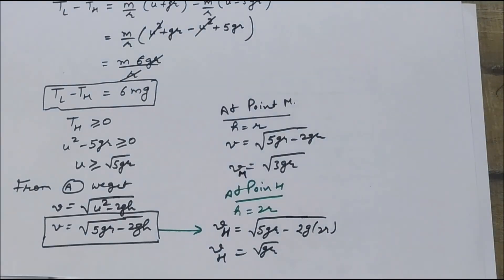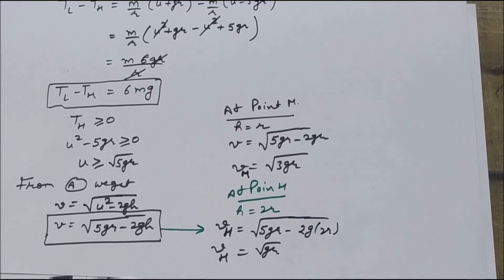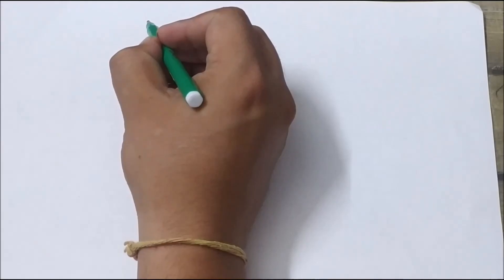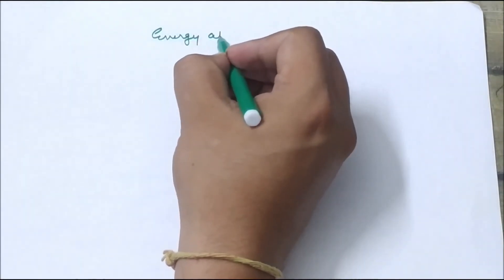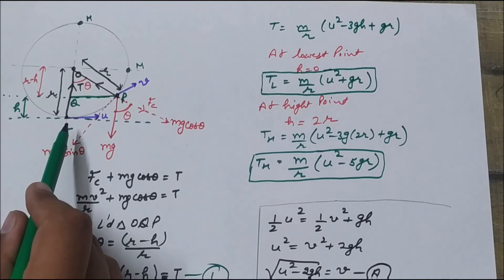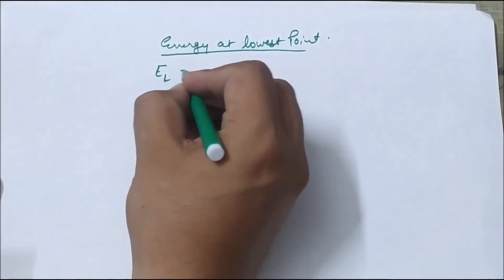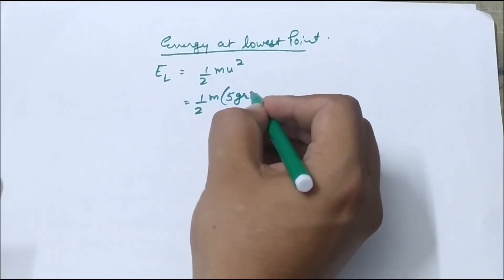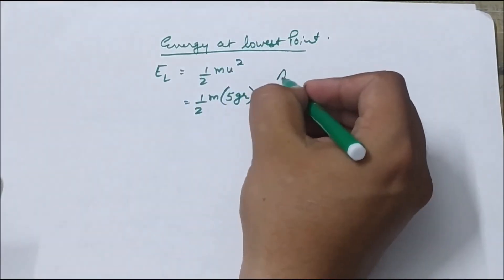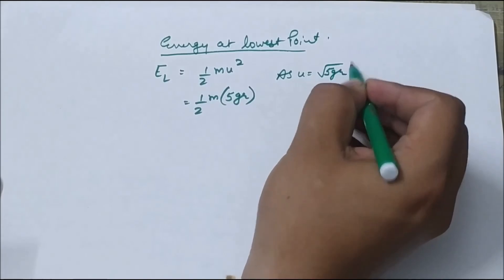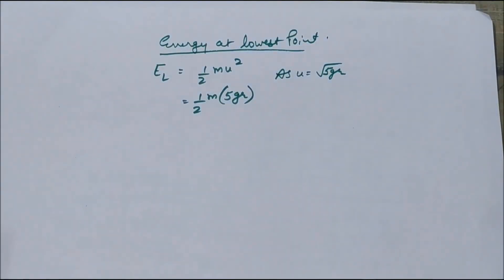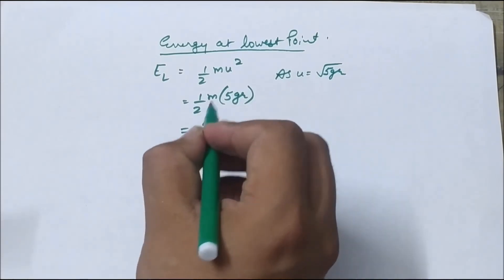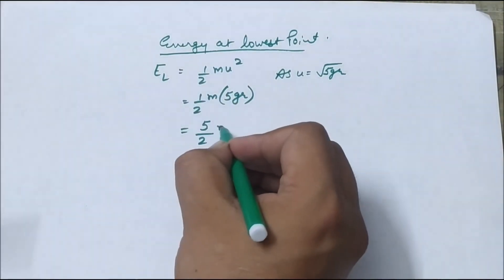Now we evaluate the energy of the particle at the lowest point and at the highest point. At the lowest point there is no potential energy, so energy equals only half m u². Since u equals root 5gr, u² equals 5gr, and the total energy at the lowest point is 5/2 mgr.